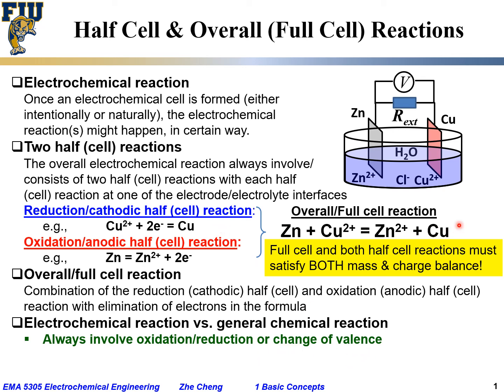Whether you look at the half-cell or the full-cell reaction, valence always changes. But a general chemical reaction may not involve a change of valence. For example, sodium chloride dissolving in water involves no change in valence, and a precipitation reaction between chloride ion and silver ion to form silver chloride also involves no change in valence.